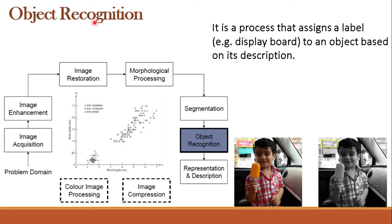Next is object recognition. Recognition means finding out a particular object from the image. Object recognition is the process that assigns a label — for example, 'display board' — to an object based on its description. For instance, iris flowers can be segregated based on petal length and petal width. Similarly, a display board can be recognized by the image processing algorithm in either a color image or a grayscale image.